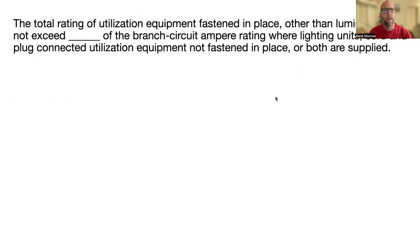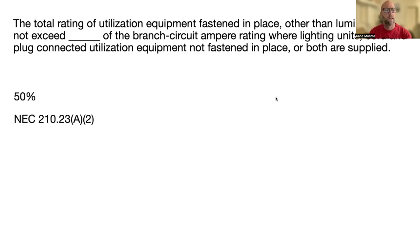The total rating of utilization equipment fastened in place, other than luminaires, shall not exceed blank percent of the branch circuit ampere rating where lighting units, cord and plug connected utilization equipment not fastened in place, or both are supplied. The answer is 50 percent — NEC 210.32(A)(2).